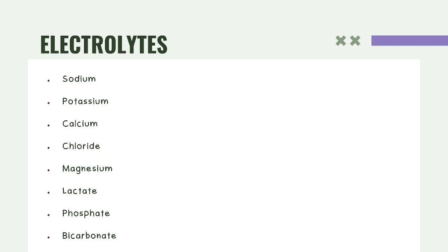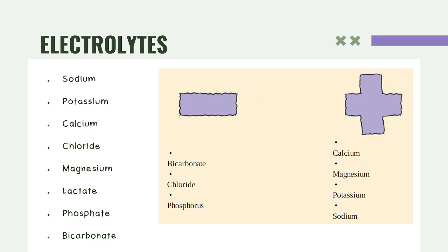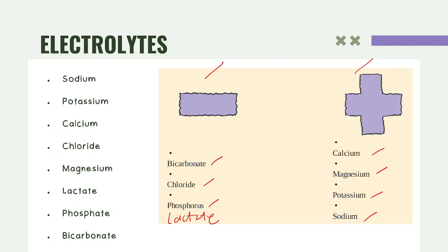Electrolytes can be classified according to the charges they carry. For negatively charged electrolytes, we have bicarbonate, chloride, phosphorus, and also lactate. For positively charged electrolytes, we have calcium, magnesium, potassium, and sodium.